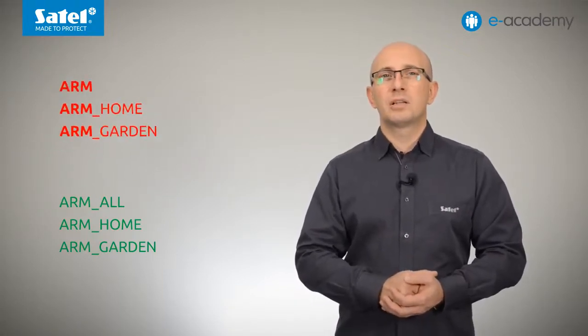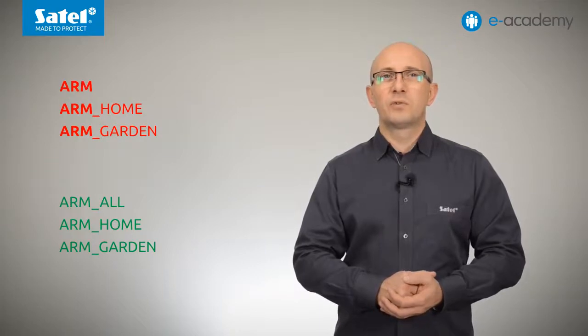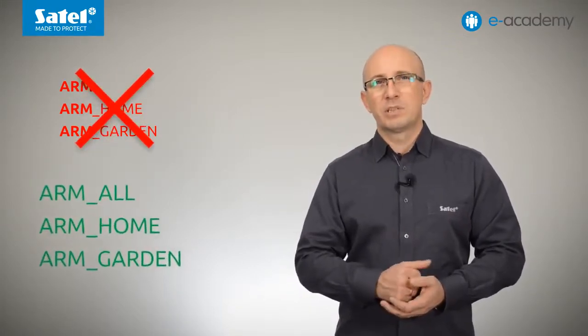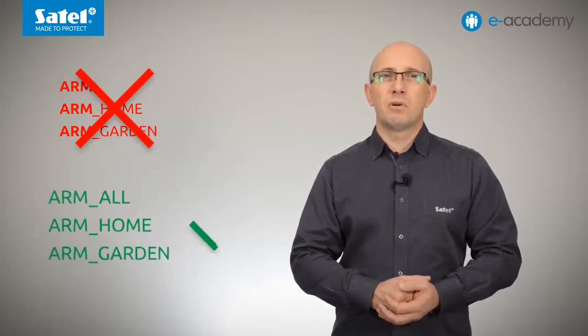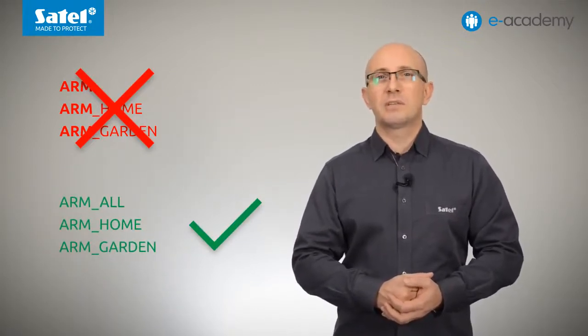As you can see, one command in the first set, namely the word arm, is part of the other two commands. This is an incorrect situation. The second set has been prepared correctly. Although the content of the messages partially overlaps, none of them is completely contained in another one.